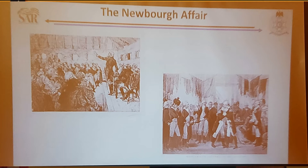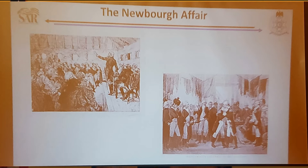Washington had a letter from Congress to read to them, promising things. He started reading and then pulled glasses out of his pocket and put them on, making the comment: 'I have not only gone gray in the service of my country, I've also gone blind.' He then began to read the letter, and all the senior officers started crying. They were able to embrace him afterwards—that's the painting over on the right.